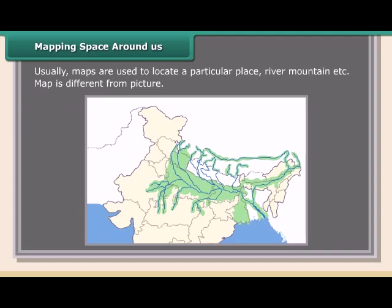Mapping space around us: Maps are usually used to locate a particular place, such as a river or mountain. A map is different from a picture. This map is drawn by Radha, showing the route from her house to her uncle's house.